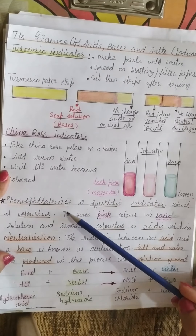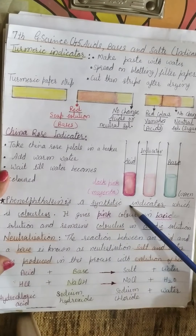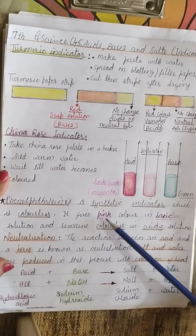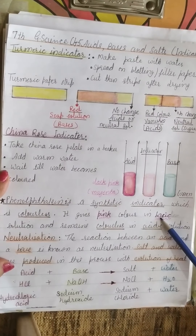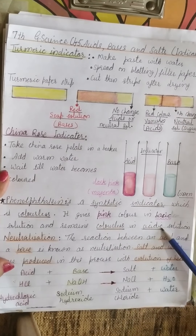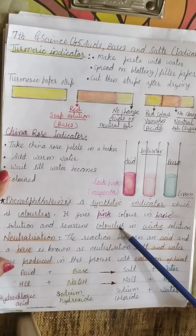Next is phenolphthalein. It is a synthetic indicator which is colorless, and it gives pink color in basic solutions. In acidic solutions it remains colorless.